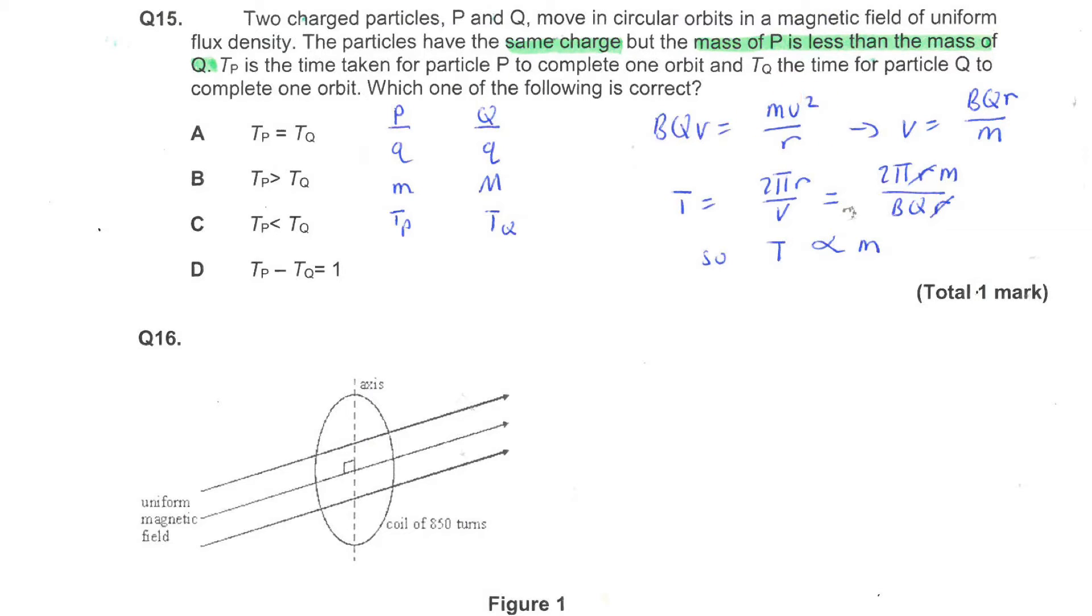The centripetal force is provided by the magnetic force on the moving charged particle. You can rearrange this equation to get an expression for the speed of the particle moving in orbit. Now, combining that with your expression for time period and simplifying, you can see that the time period is proportional to the mass.